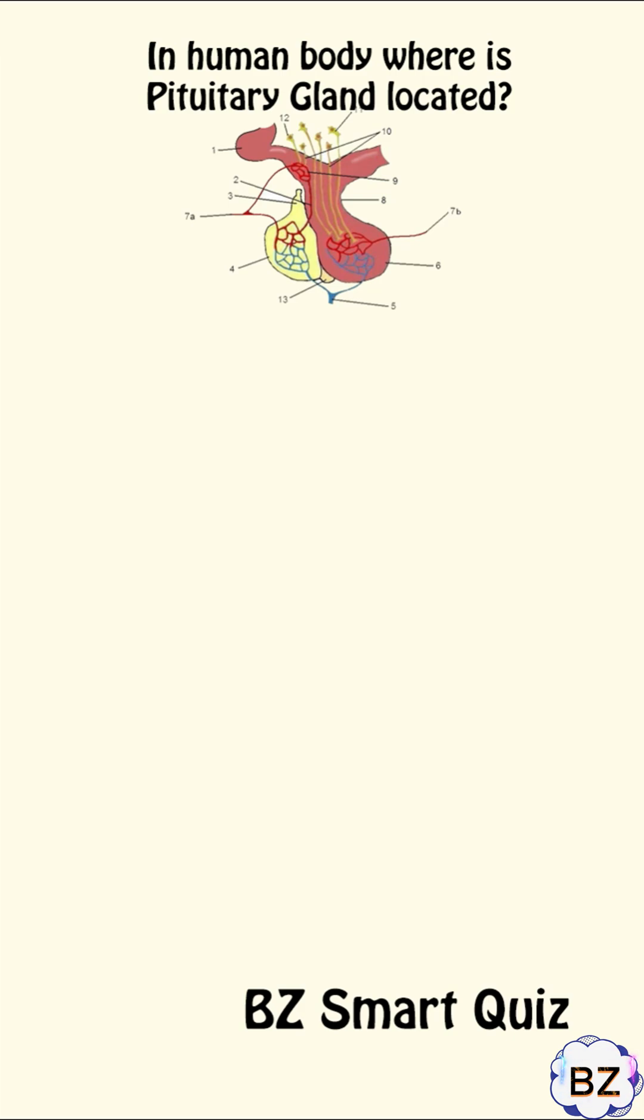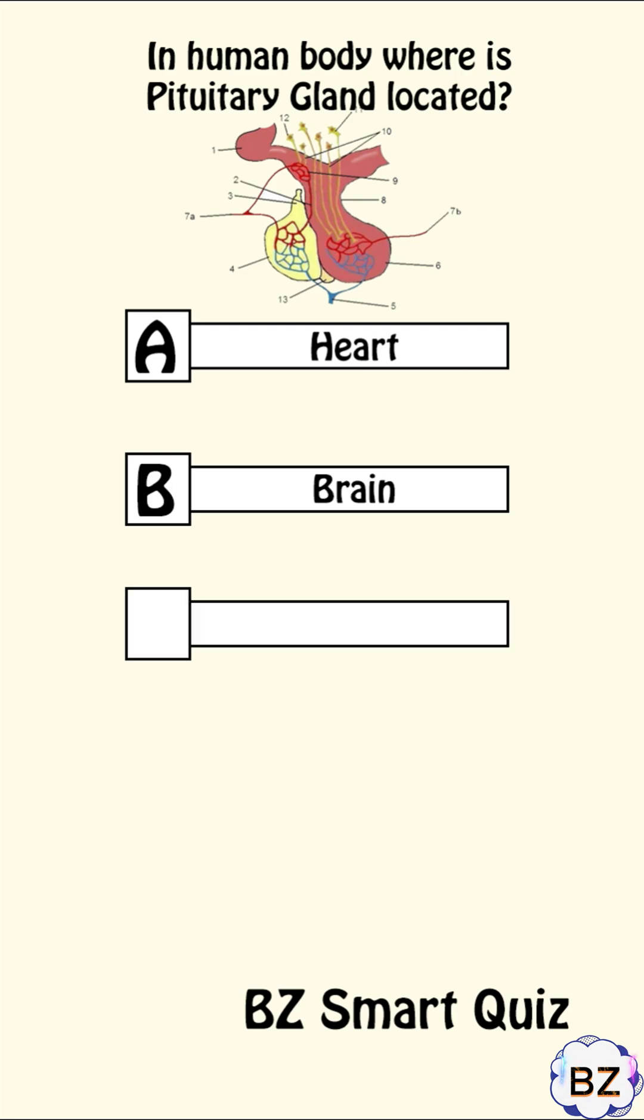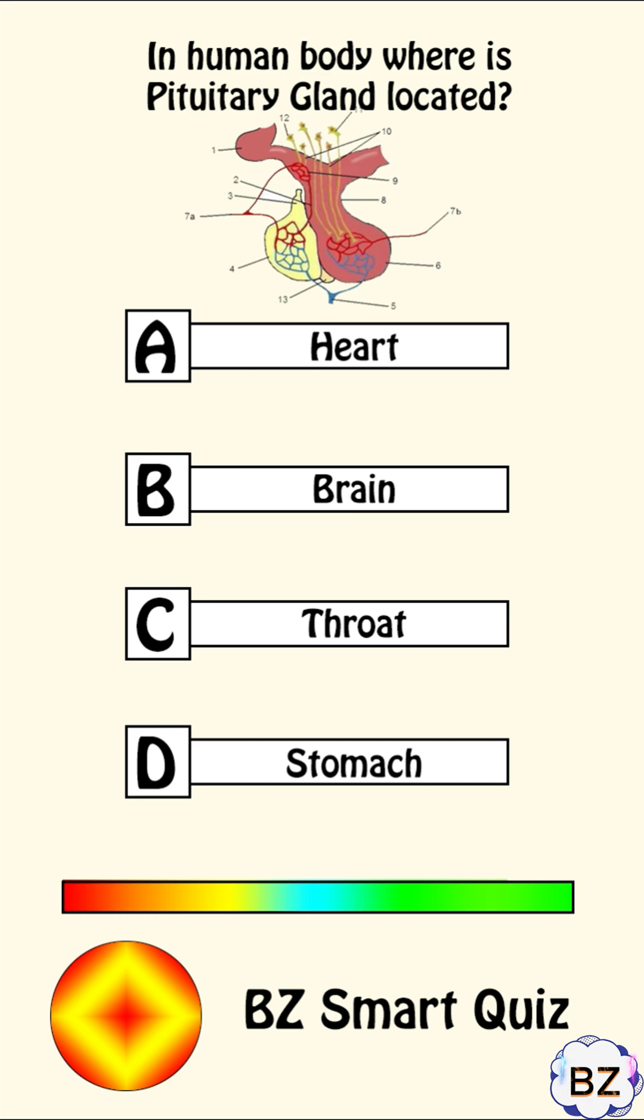In human body, where is pituitary gland located? A. Heart, B. Brain, C. Throat, D. Stomach. Correct answer: B. Brain.